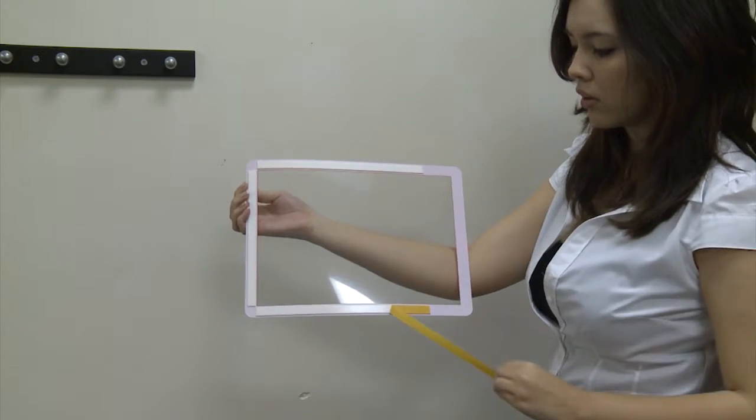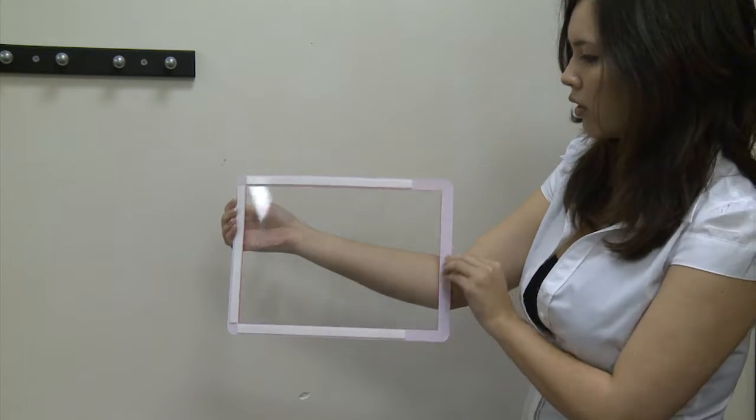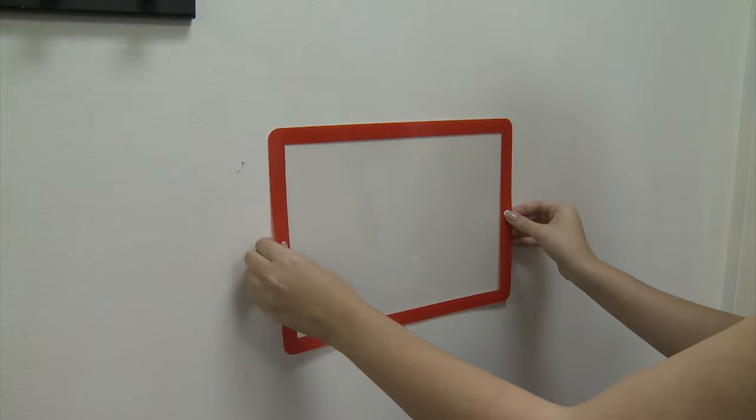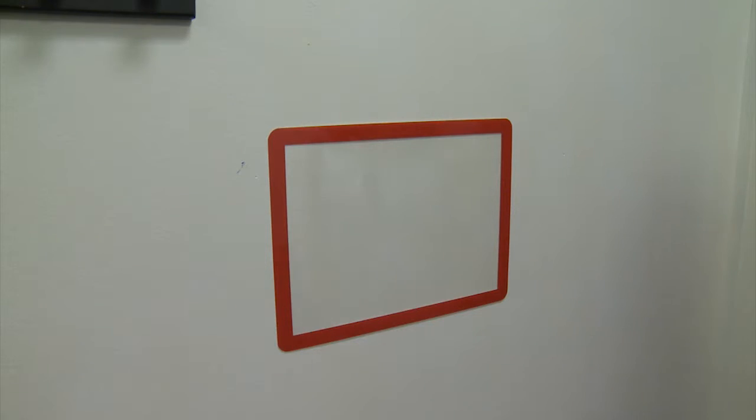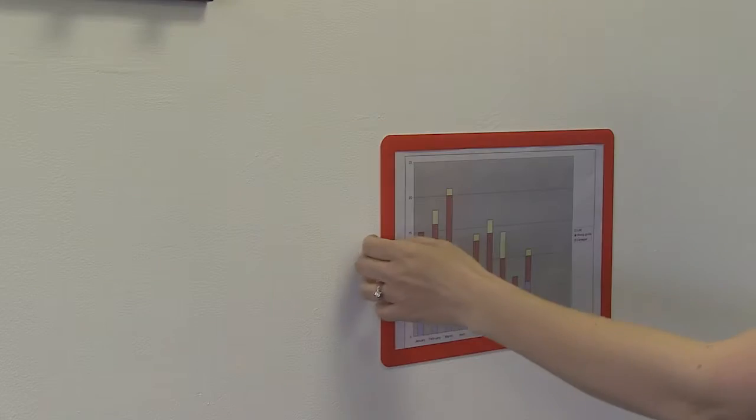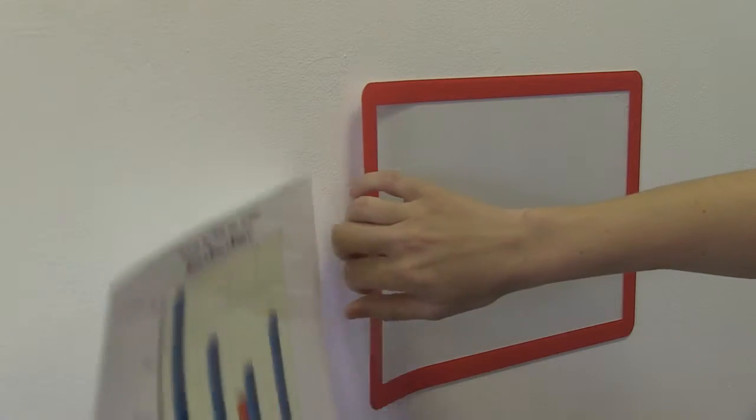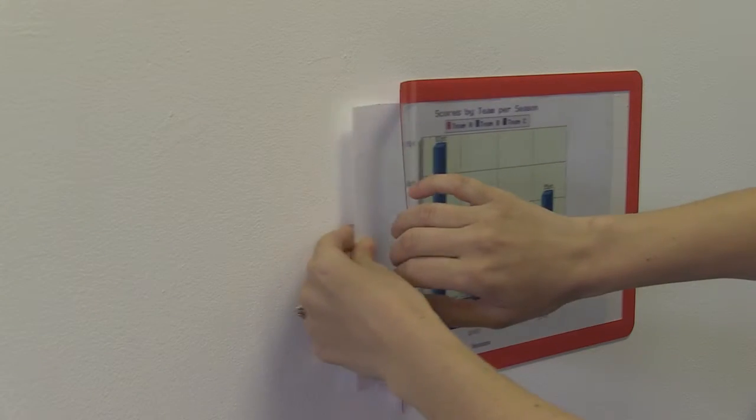There are two fixing options: self-adhesive for permanent fixing and magnetic for most steel surfaces, such as within industry, on steel shelving, or in the home on the door of a refrigerator. Once the frame is positioned, the information within the frame can be changed and updated whenever necessary.